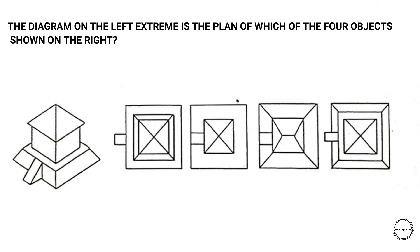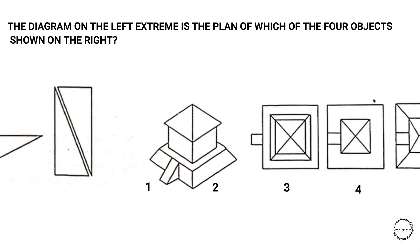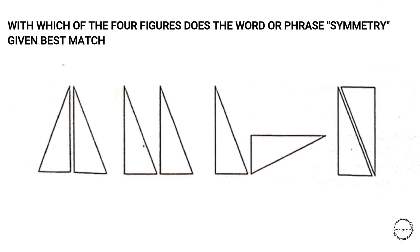Moving on: the diagram on the left extreme is the plan of which of the four objects shown on the right? You need to choose from the four options, and the answer is number four. Next question: which of the four figures does the word 'symmetry' best match? This is pretty easy and the answer is one.